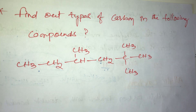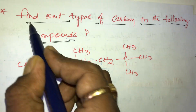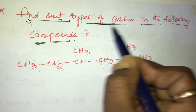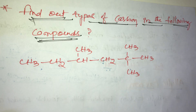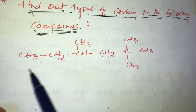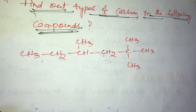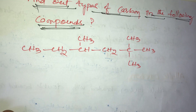Hello students. The question is: find out the types of carbon in the following compound. In this molecule, how many types of carbons are there? We need to identify primary, secondary, tertiary, and neo carbons.